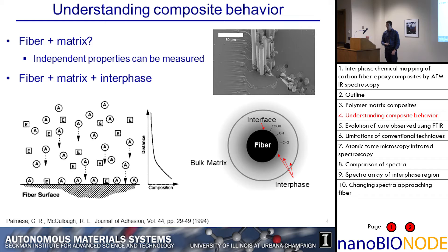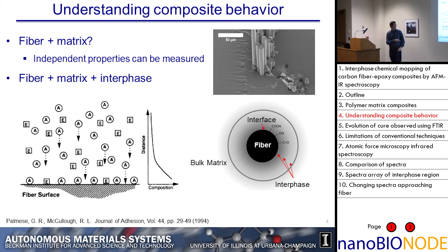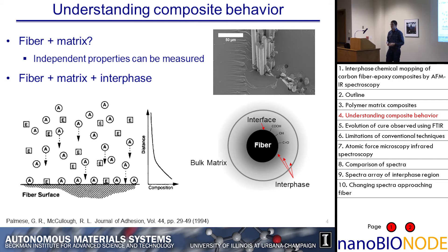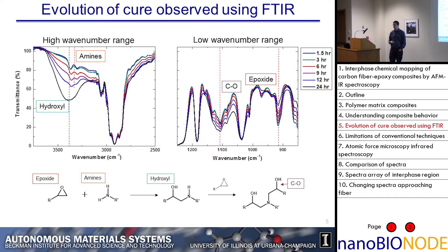This idea of the interface isn't a new one — it's been around for quite a long time. The notion is that when you have your matrix material carrying it near a carbon fiber surface, the components of the epoxy can develop a gradient around the carbon fiber surface due to the functionality there. What you end up with is actually a region around the fiber that is chemically distinct from the bulk matrix region. To investigate chemical changes in epoxies, we can look at traditional FTIR mapping and actually track the chemical reaction that's happening.